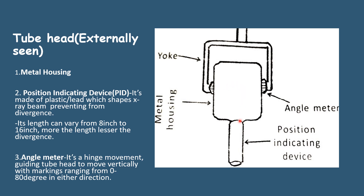This is the metal housing. The position indicating device, or PID, is made of plastic or lead. PID shapes the x-ray beams, preventing them from diverging. The greater the length of the PID, the lesser the divergence. The length can vary from 8 inches to 16 inches. This is the PID.